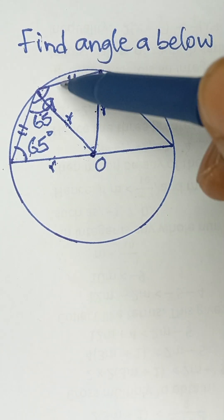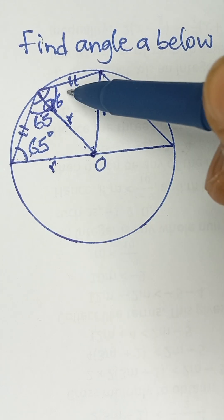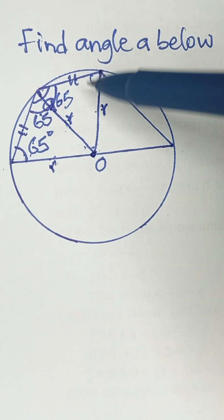So if this is 65 and 65, it means that these two base angles are also 65, and this is also 65.